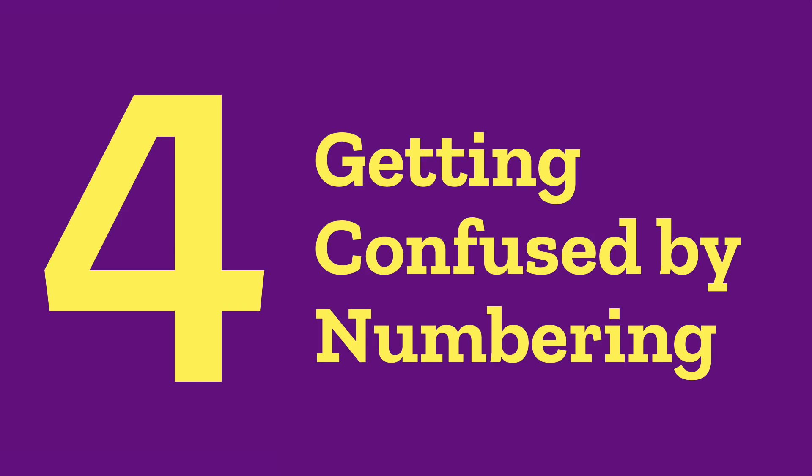Mistake number four: we have habits from the past where numbers mean column numbers — column one, two, three, four. But in CSS Grid, the numbers don't refer to columns; they refer to lines. So you've got line number one, two, three, four, five. A four-column layout actually has five numbers, five lines. Once you remember that change, it becomes much easier — you say 'I want this to go from line one to line five,' and you know that spans four columns.